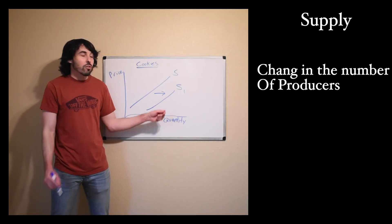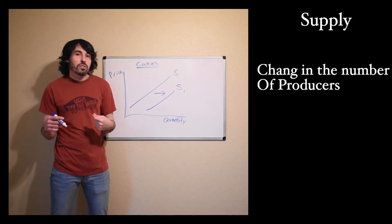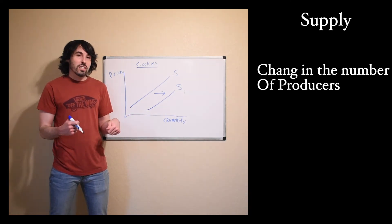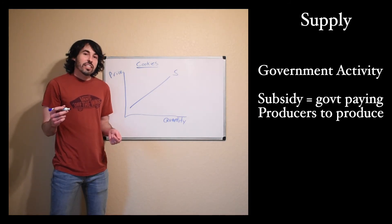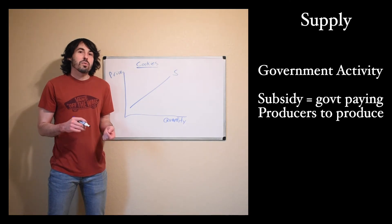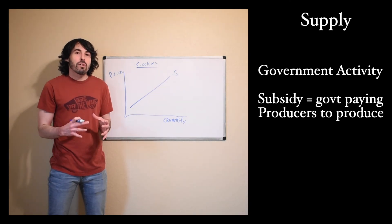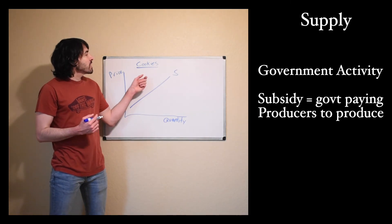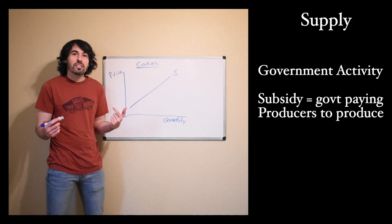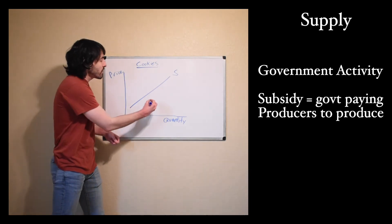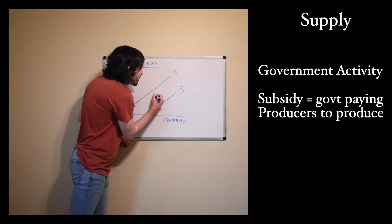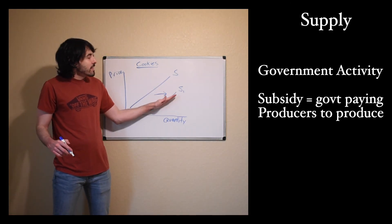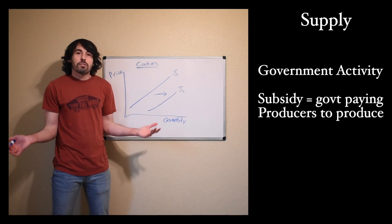The opposite could be true as well — a shift to the left of the supply of cookies if one of the cookie producing companies were to go out of business, or maybe there's a fire at a factory, which would mean fewer cookies available. A final thing that could change supply would be government action. A subsidy is when the government pays a producer to make a product. In the U.S., we subsidize corn production. Let's pretend the government subsidized cookie production — they want more cookies on the market, so they pay producers to make them. That subsidy will cause an increase in supply, making it cheaper for consumers, so at every price there are more cookies available for everyone.